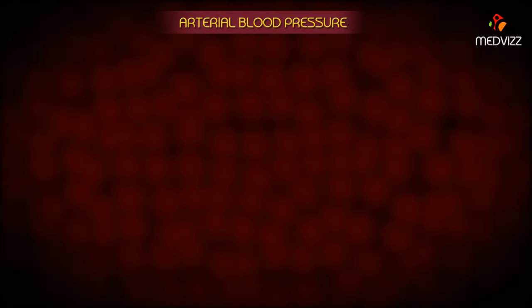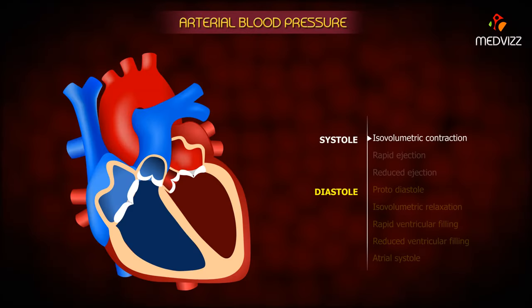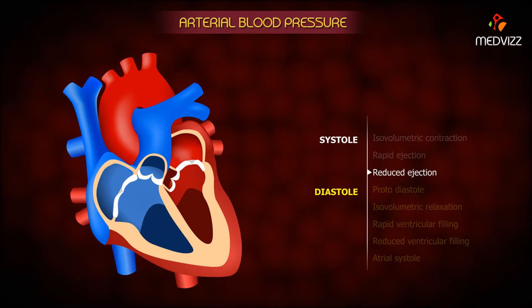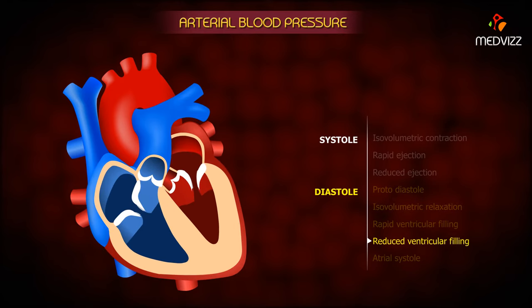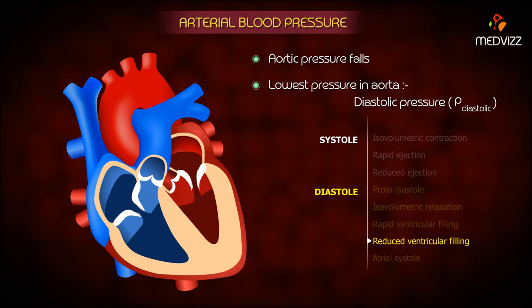Arterial blood pressure. When the left ventricle ejects blood into the aorta, the aortic pressure rises. The maximal aortic pressure following ejection is termed the systolic pressure. As the ventricle is relaxing and refilling, the pressure in the aorta falls. The lowest pressure in the aorta, which occurs just before the ventricle ejects blood into the aorta, is termed the diastolic pressure.